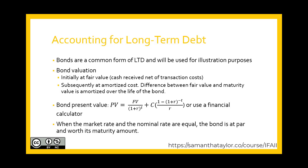We'll walk through this topic using bond accounting. Bond valuation: we need to look at it initially when it's issued at fair value, meaning the cash received net of transaction costs. It's subsequently measured at amortized cost, which is the difference between its fair value and its maturity value. We're going to use a financial calculator to determine the interest rate and the amortization of that bond discount and premium, and this occurs when the market rates and the nominal rate are not equal.